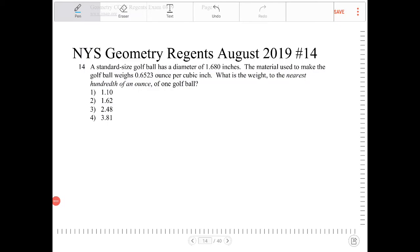A standard size golf ball has a diameter of 1.68 inches. The material used to make this golf ball weighs 0.6523 ounce per cubic inch. What is the weight to the nearest hundredth of an ounce of one golf ball?